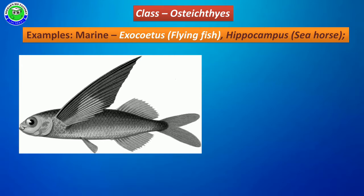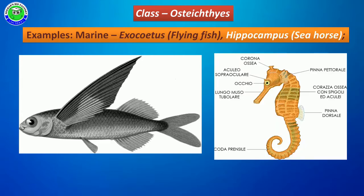Some Osteichthyes members belong to different categories. Some belong to marine habitat, like Exocoetus, called the flying fish — they have wing-shaped fins, but these are not useful for flying; with the help of these fins they can jump within water. The second example, Hippocampus, is also called the sea horse, having a shape like a horse.